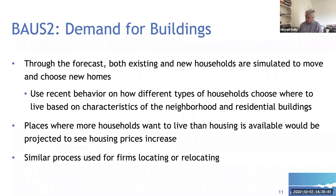Now I'll step more into the functioning of the model, Bay Area Urban Sim 2. I'm framing it in a traditional economics way, though it's not strictly an economic model — most economists would not like how this model works, since there's a lot of other types of thinking in it. There is a demand for buildings. When we run Urban Sim through the forecast into future years, we take a bunch of households — we have households in most of the housing units — and every few years we get additional households from the external forecast that are moving into the Bay Area.